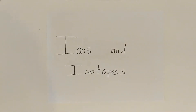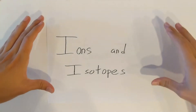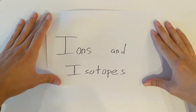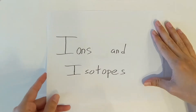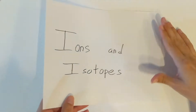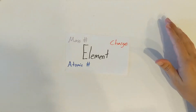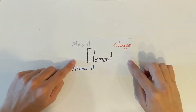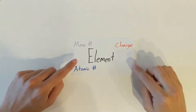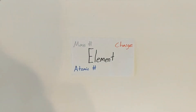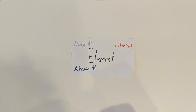Today's set of notes is going to be on ions and isotopes. I want to start off with a little bit of review from last week. We have our atomic symbol here, and we are going to be using it to help us with our ionic notation and our isotope notation.